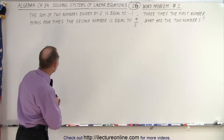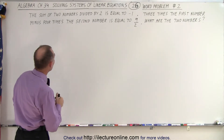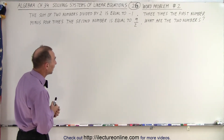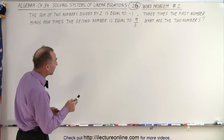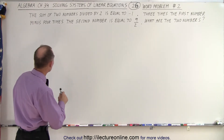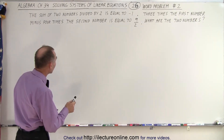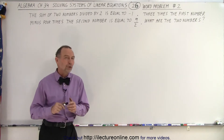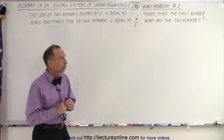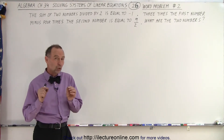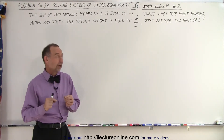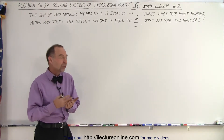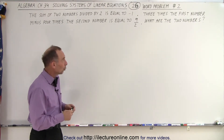What do we have? We have the sum of two numbers divided by 2 is equal to negative 1, and 3 times the first number minus 4 times the second number is equal to 9 over 2. What are the two numbers? We're dealing with two numbers, two variables, so we can let one be equal to x and the other equal to y.